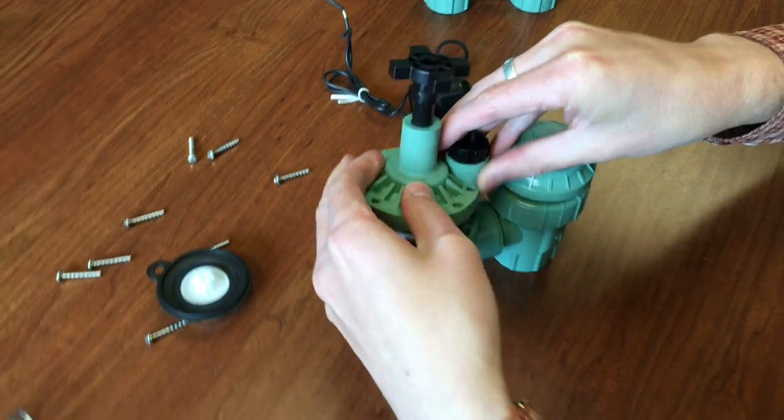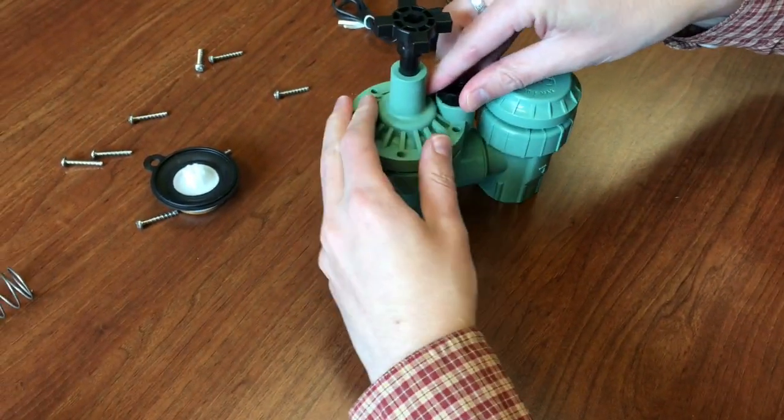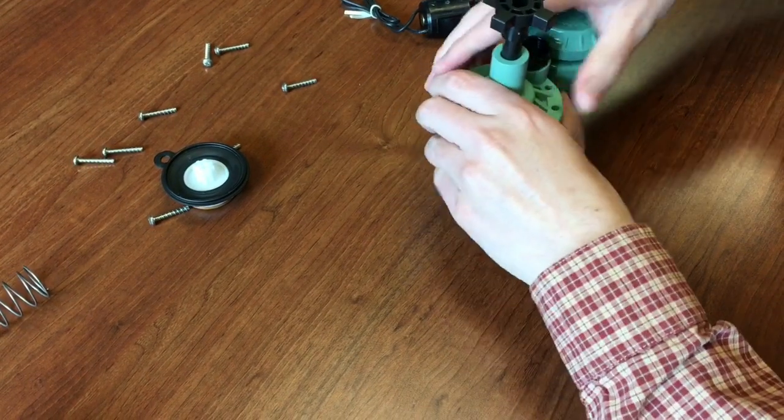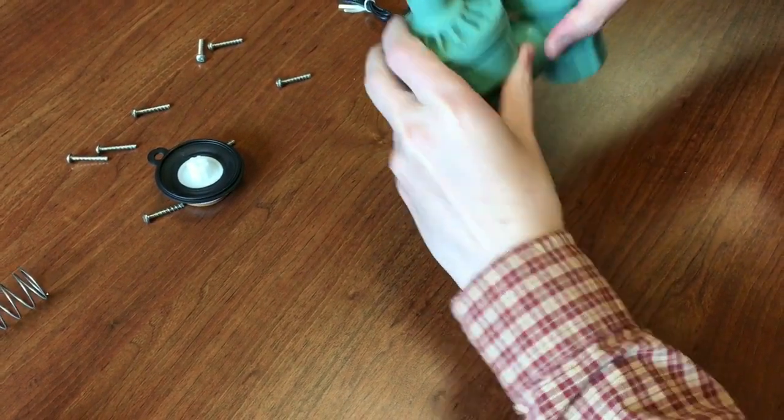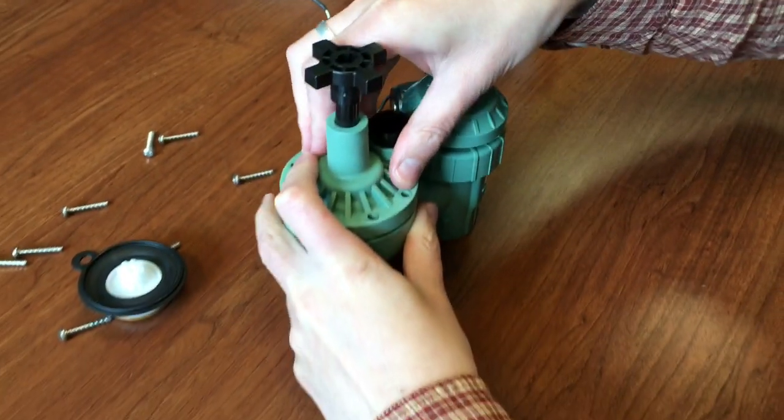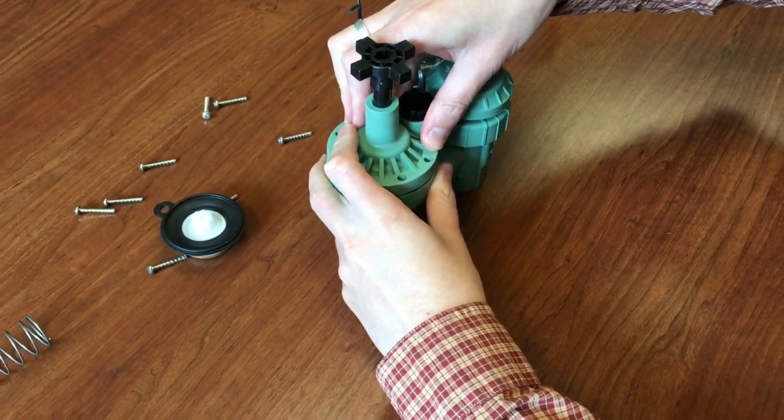And then to replace that, you just put it back on, you'll fill that seat, and then you'll notice there's that gap there. When you screw down each of these, it will close that gap and create a good seal.